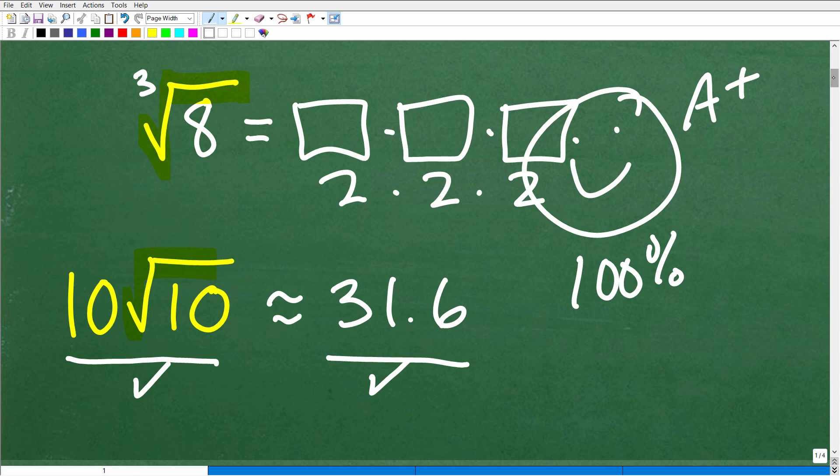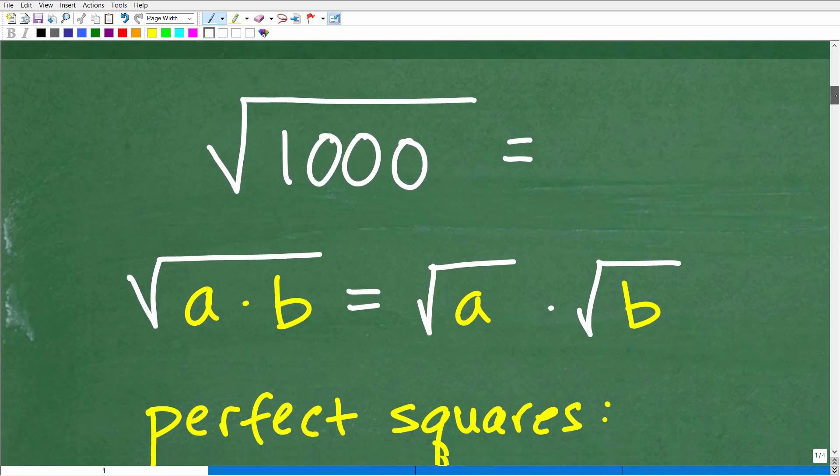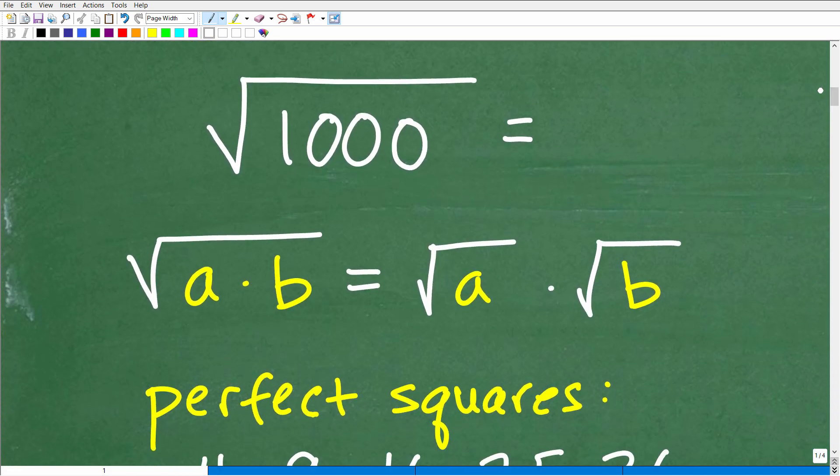But let's go ahead and get into this problem right now. And really, the key to doing this problem is knowing two things. One, you need to know a property of radicals and square roots.